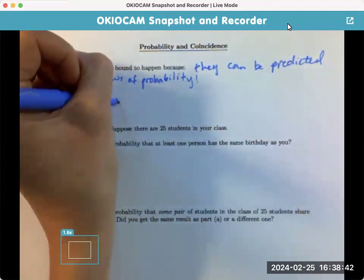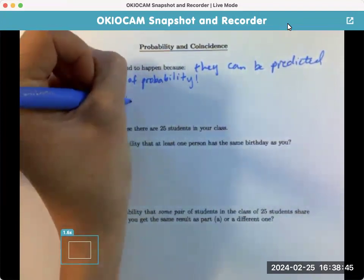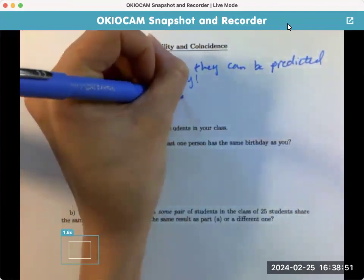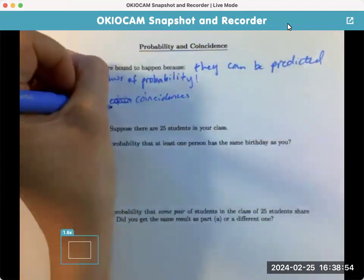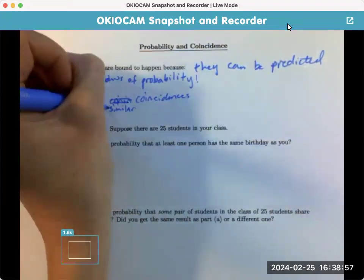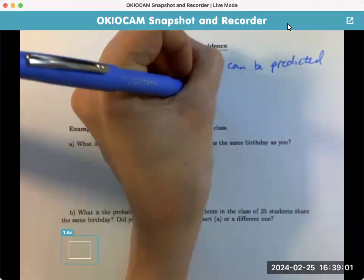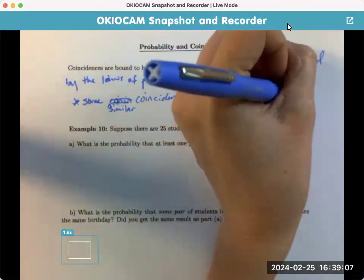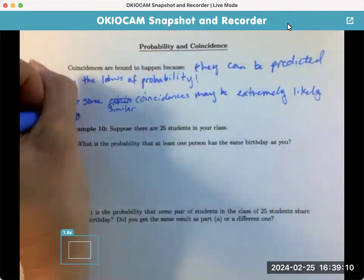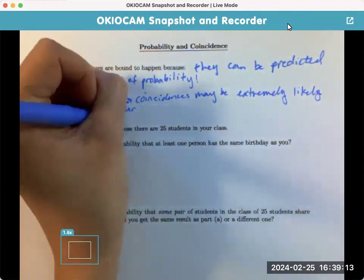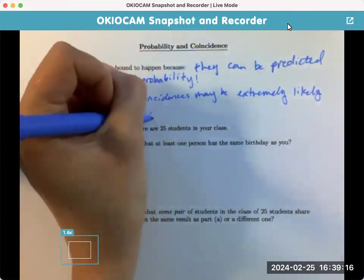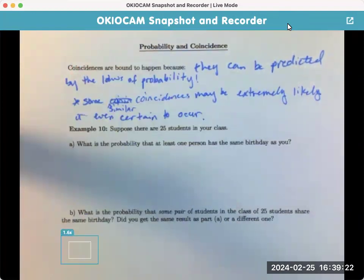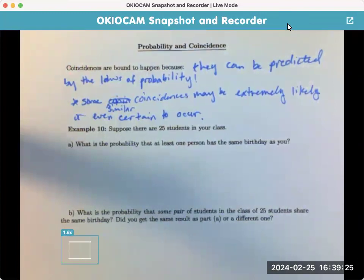So, some coincidences. If I can spell - y'all know I can't spell. Coincidences. There we go. Some similar coincidences may be, coincidences may be extremely likely or even certain, right? That means like 100% or a one to occur. I like this question. This one's cool.